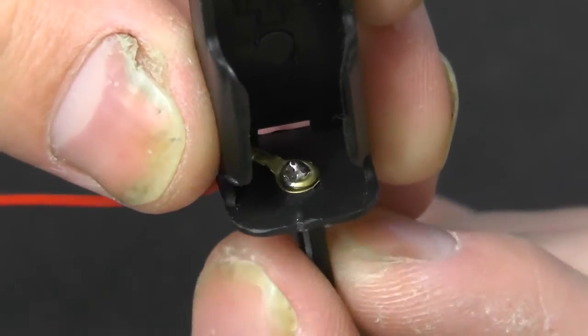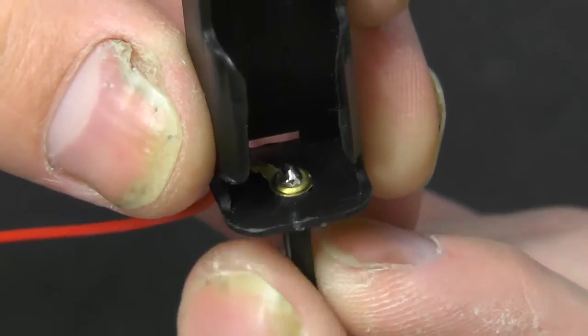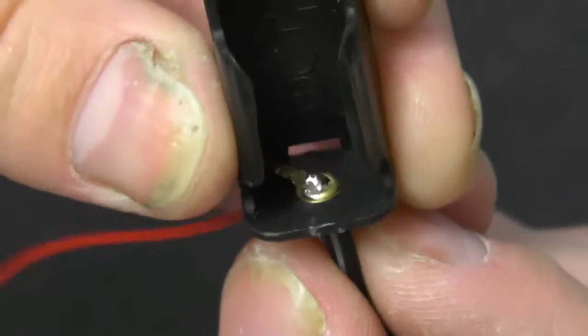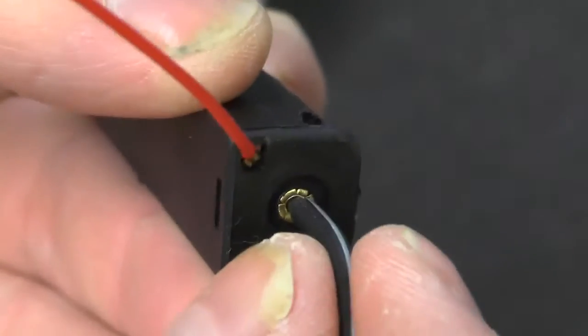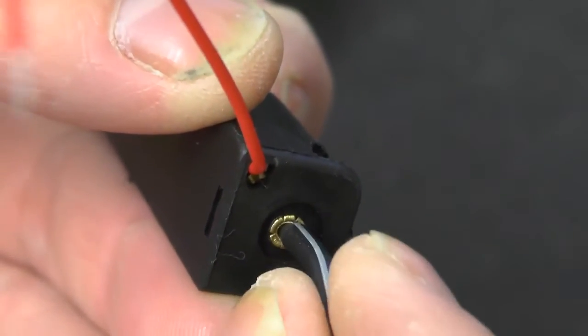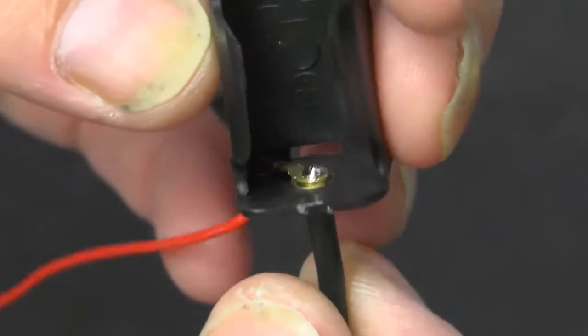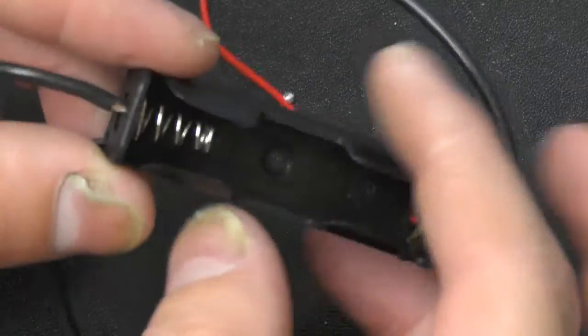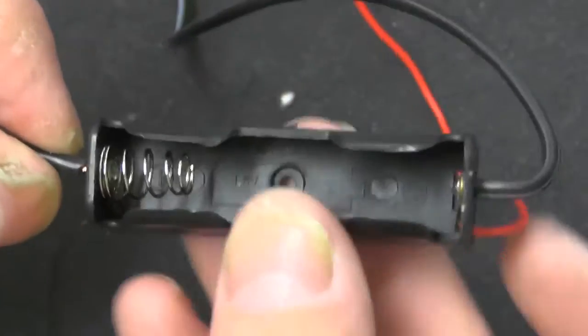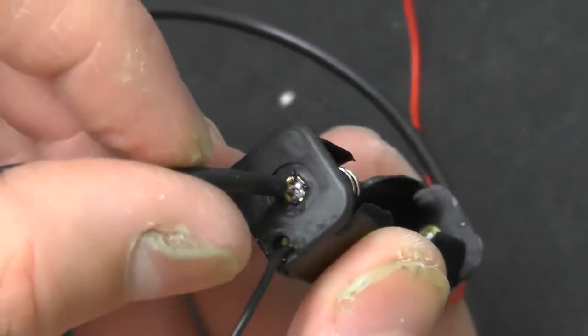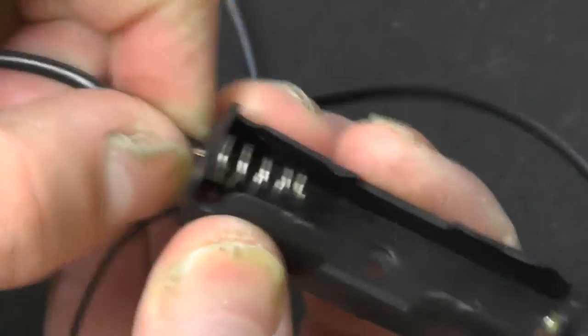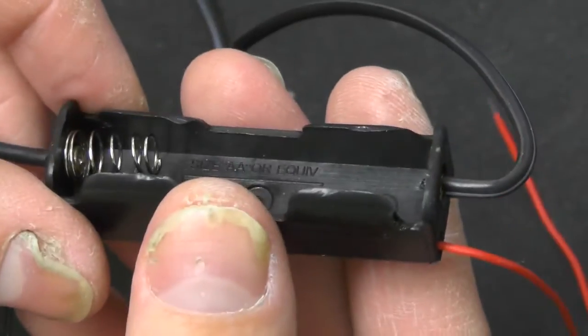So I've got that soldered on there. I think I might just reflow it a little bit - it's pretty secure but just to make sure. Okay, I've got the wire soldered in there. Now the negative side was a bit awkward, it melted a little bit, but I think I've got it soldered in there pretty good. So I just need to tidy this up now.